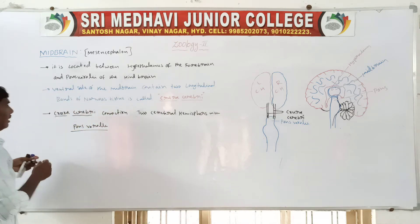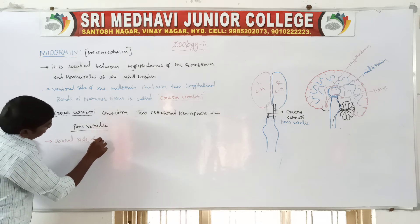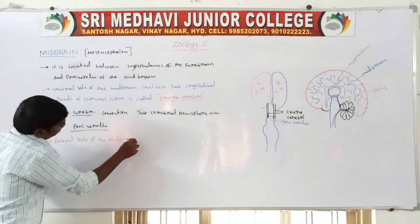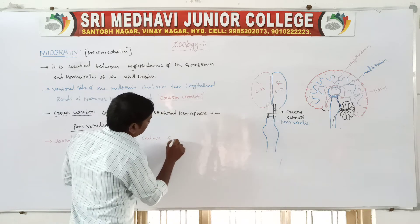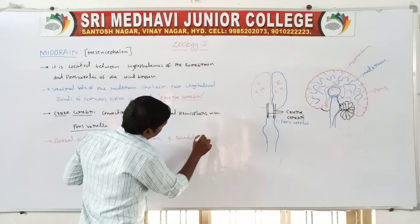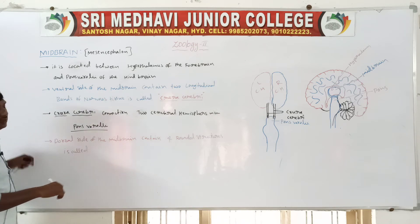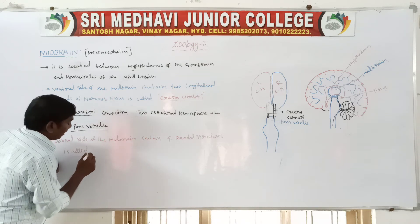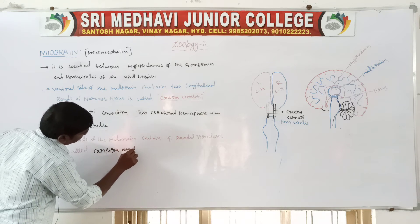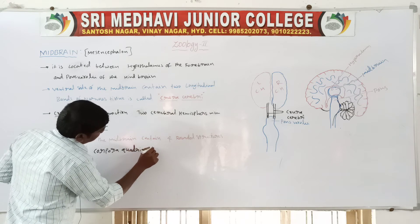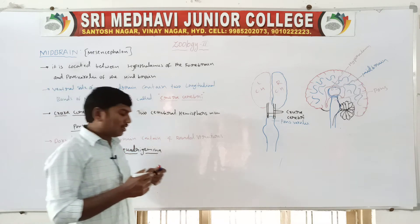Next one — the dorsal side of the midbrain. The dorsal side of the midbrain contains four rounded structures. These four rounded structures are called as corpora quadrigemina.